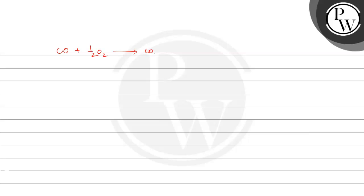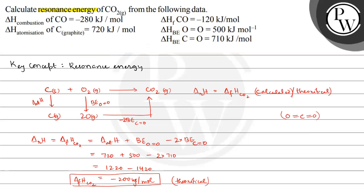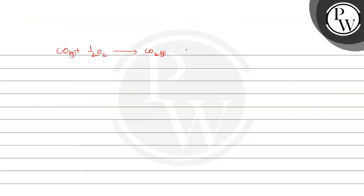Now the observed value — we can calculate it from the combustion of carbon monoxide: CO plus half O₂ gives CO₂. The enthalpy of combustion of carbon monoxide is given as −280 kJ/mol, so delta H of this reaction is −280 kJ/mol.